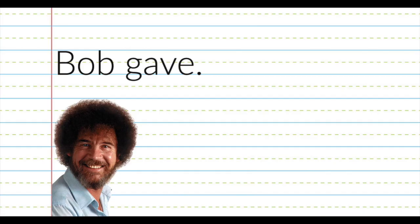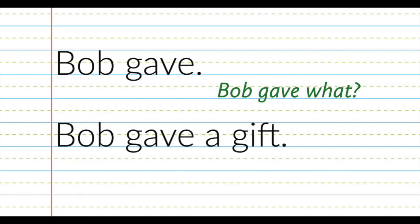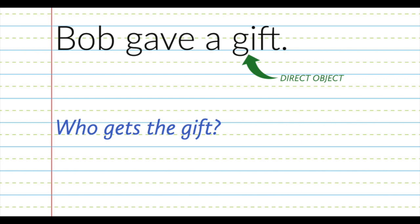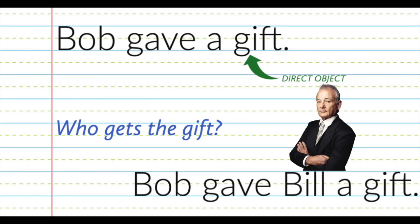Bob gave. Let's add to this. Bob gave what? We're going to add a direct object: Bob gave a gift. Now if we take it one step further, we're introducing the indirect object. Who is getting the direct object? Bill.